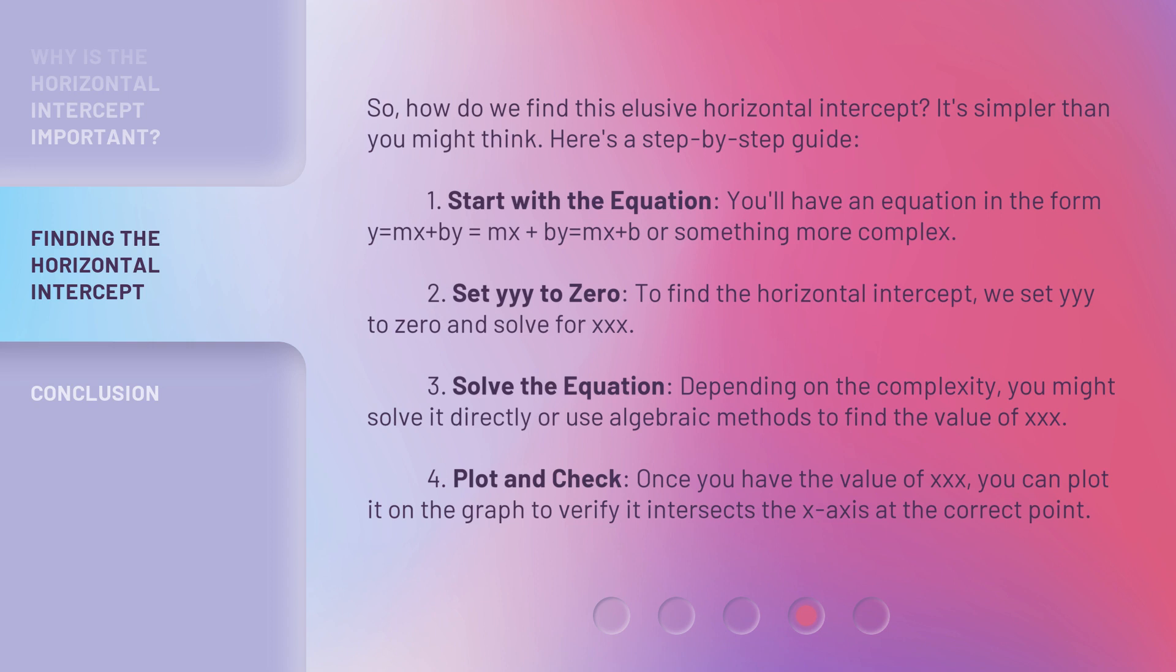2. Set y to zero: To find the horizontal intercept, we set y to zero and solve for x.